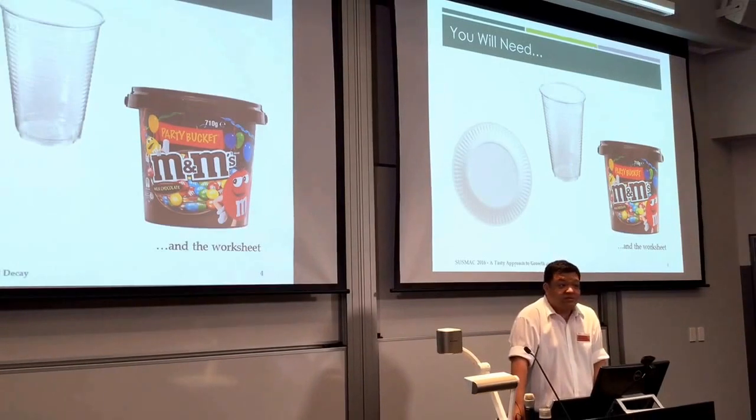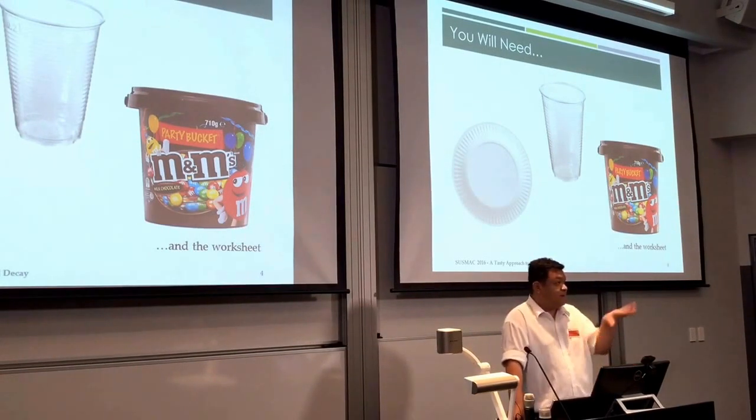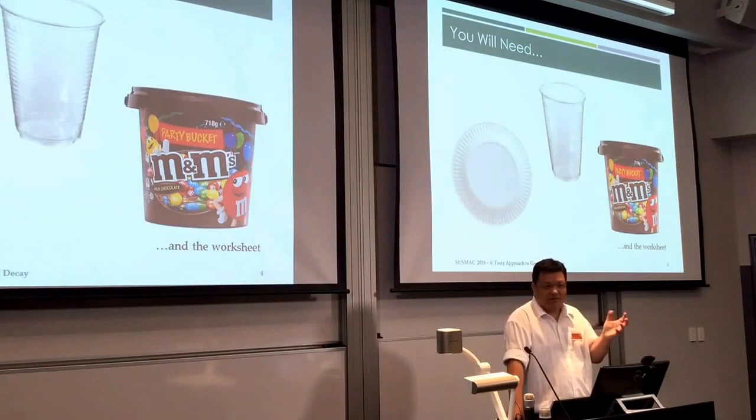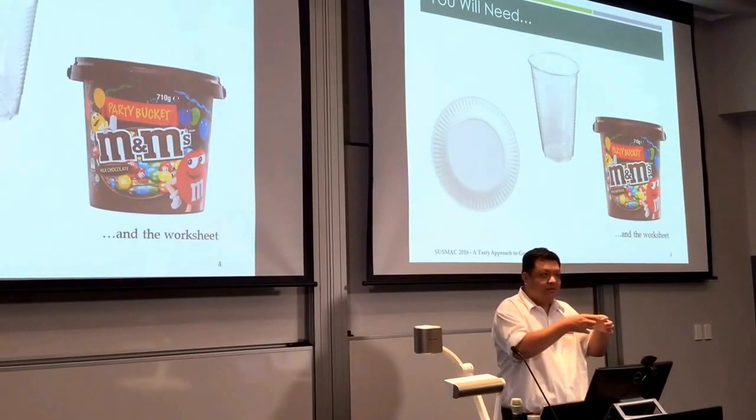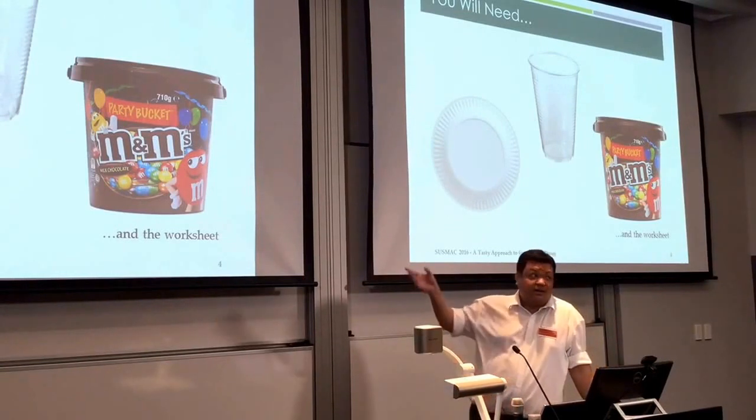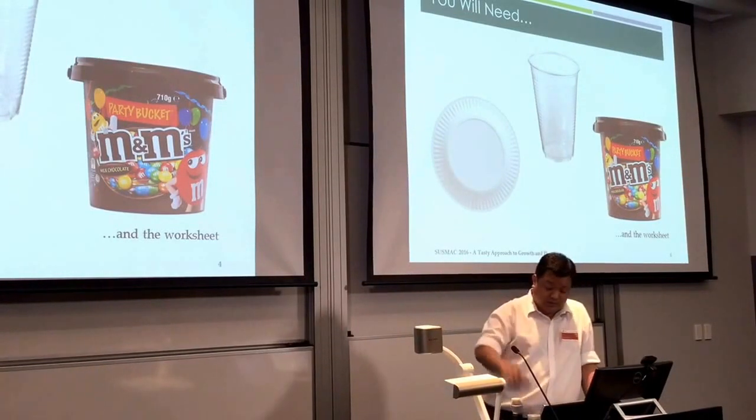I find it works best with just the regular M&Ms because they are a little bit flatter, they do sit on one side whereas your little crispies and your peanut M&Ms they roll around and you don't get the M showing very clearly. If they are allergic to chocolate, Skittles work as well so you can use that.